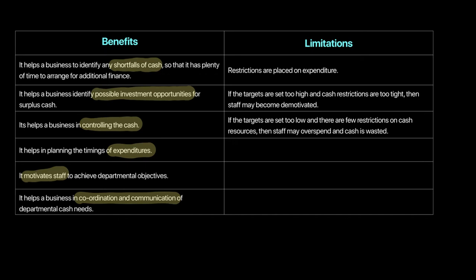However, looking at limitations, restrictions are placed on expenditures. Sometimes a firm might have to make certain expenditures that are necessary for the business, but the cash budget might not allow that. Sometimes targets are set too high and cash restrictions become too tight, which could lead to demotivation of staff. Also, because the cash budget does not allow certain expenditures, it can lead to surplus cash which may be overspent on pet projects or wasted on resources the firm could have used elsewhere.